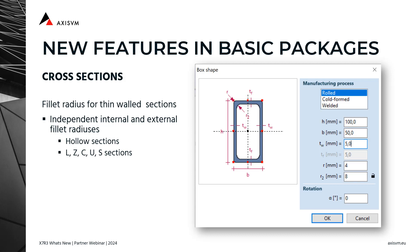There are two new minor features regarding thin-walled cross-section definition in X7R3. The first is that the definition of an independent inner radius has been made available for hollow sections.